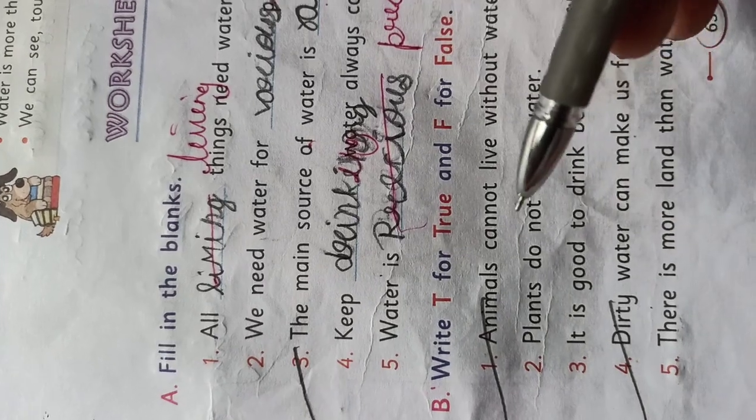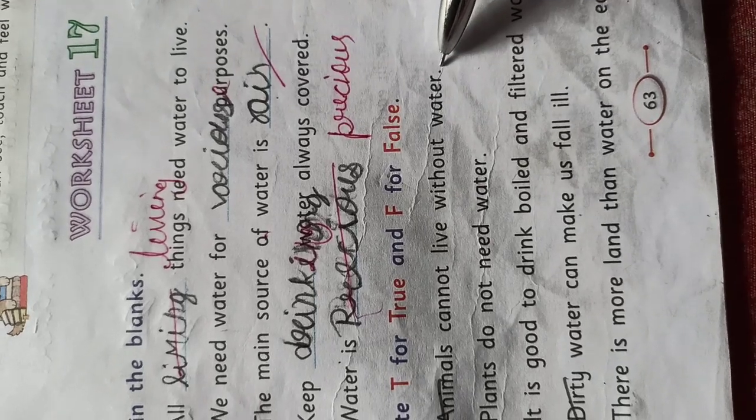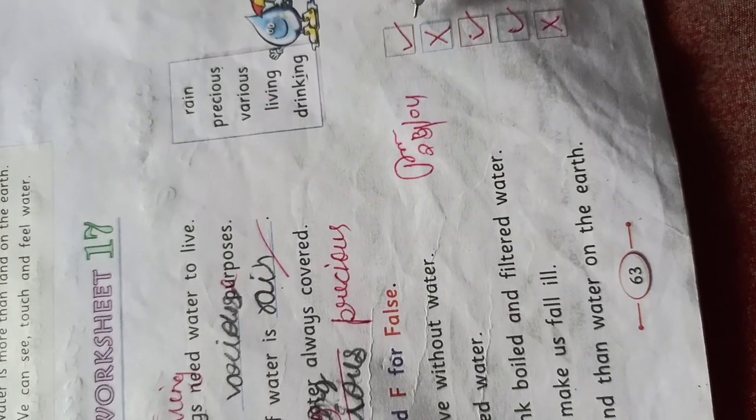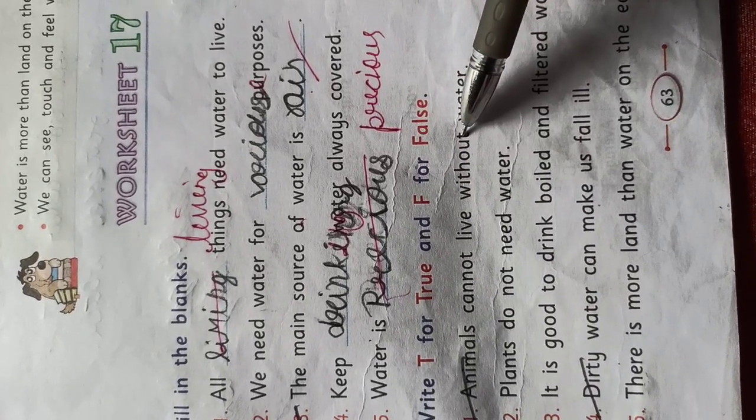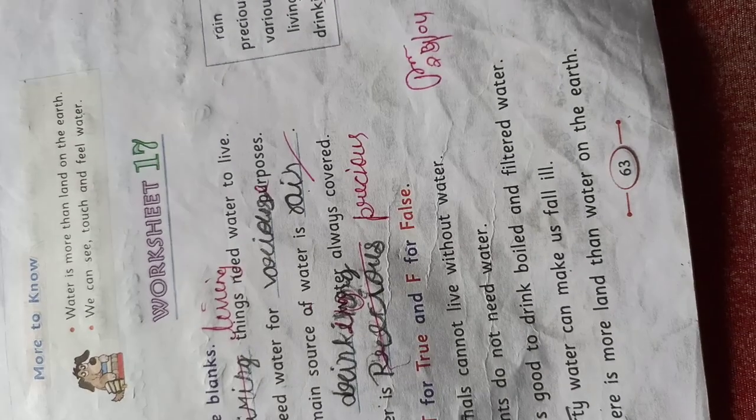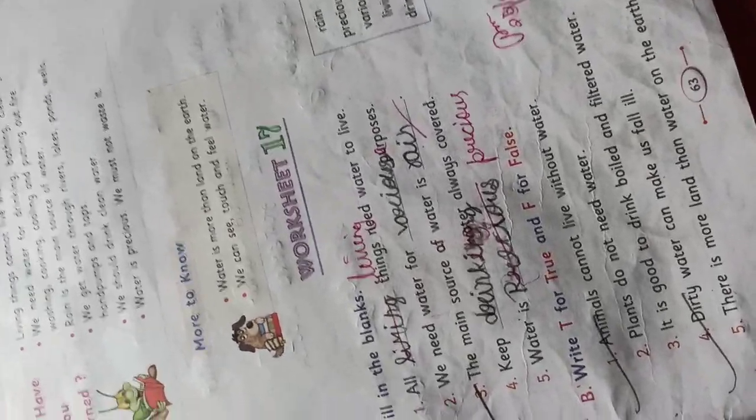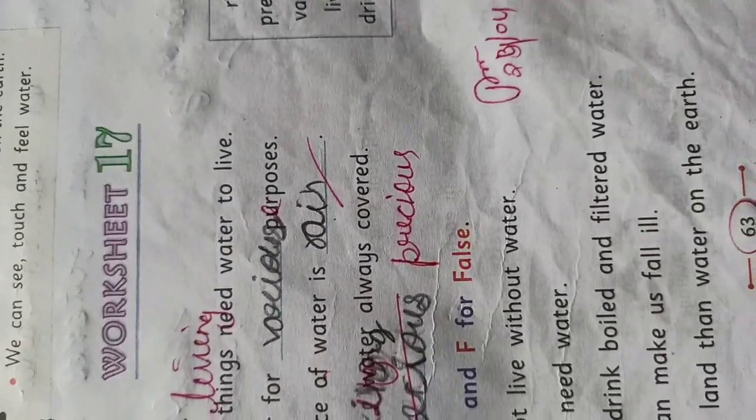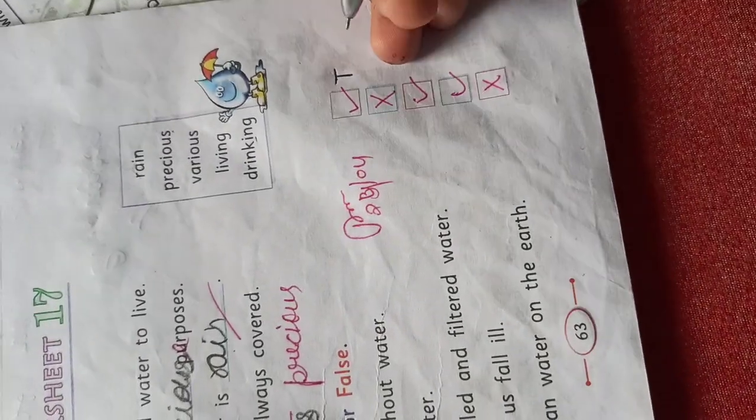Exercise B: Write T for true and F for false. First, animals cannot live without water. Animals cannot live without water—this sentence is true. So don't put the marks right here. True. Right here, true.